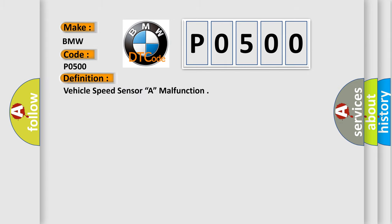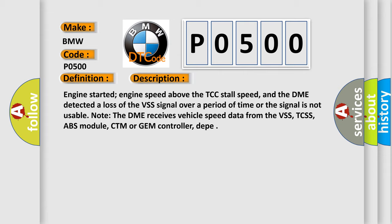The basic definition is Vehicle Speed Sensor A, Malfunction. And now this is a short description of this DTC code.